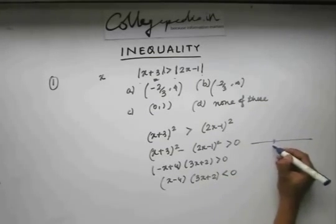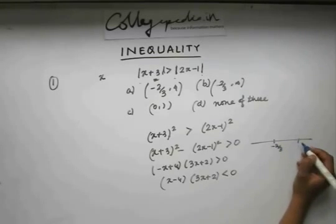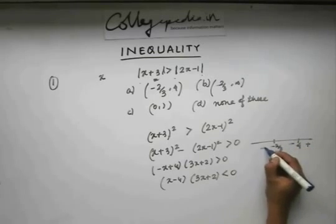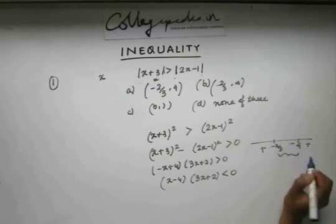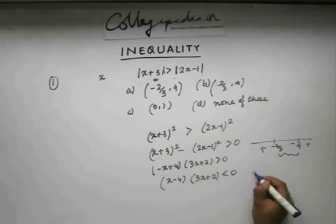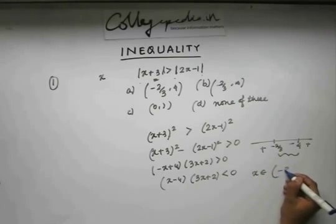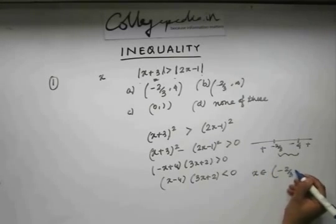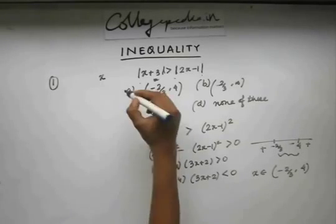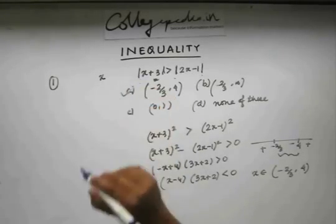The roots are −2/3 and 4. Using a number line, the sign alternates: positive, negative, positive. So the answer is x lies in the interval (−2/3, 4), making option A the correct option.